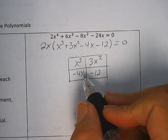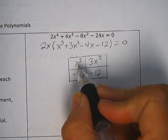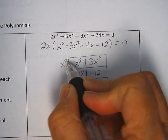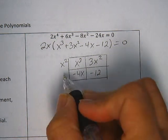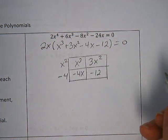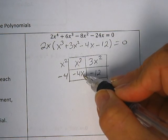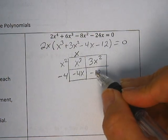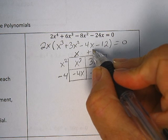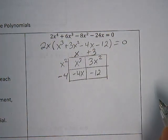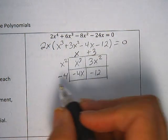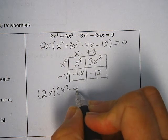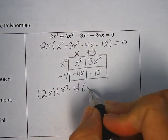Now we're going to factor out the common terms in each row and each column. So x cubed and 3x squared both have an x squared in common. Negative 4x and negative 12, I can factor out a negative 4 there. Between x cubed and negative 4x, we can factor out just an x. And 3x squared and negative 12 both have a 3, so we'll factor out a positive 3. So at this point my factors are the 2x — we can't forget that — we also have an x squared minus 4, and we had an x plus 3.